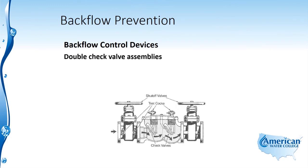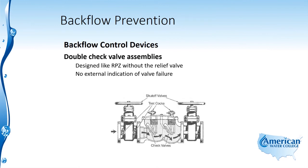Another type of backflow control device is the double check valve. It's designed like the RPZ, but does not have the relief valve between the two check valves to create that open zone. So there is no external indication of valve failure in this case — whereas with the RPZ, if there's a blocked check valve, you'll see drippage from that gap between the two check valves.